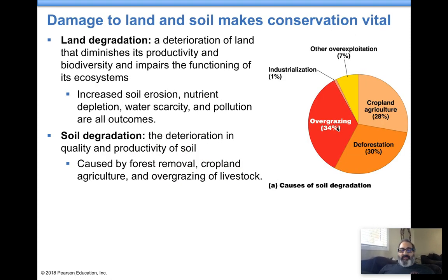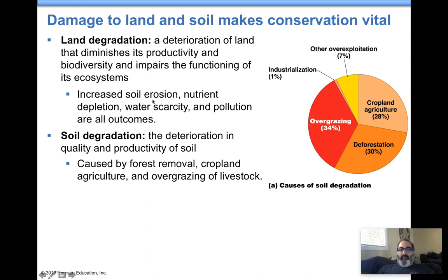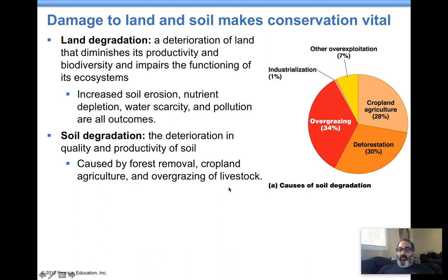Land degradation — everything to preserve soil comes down to reducing erosion. Anything that reduces productivity and biodiversity is land degradation, which leads to erosion, no nutrients, water scarcity, and pollution. Soil degradation refers to the change in quality of the soil. Overgrazing is a big problem — when animals trample all over the soil, eat everything down to nothing, and continue to trample, they compact the soil and create a lot of problems.